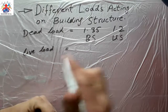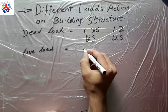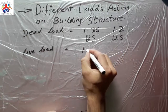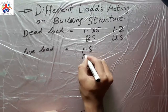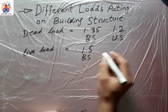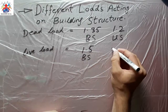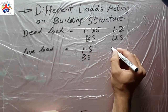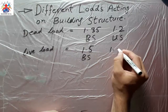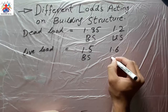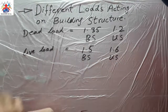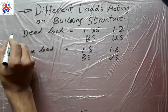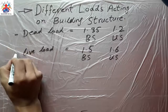The factor of safety for a live load is 1.5 in British standard and 1.6 in US standard.